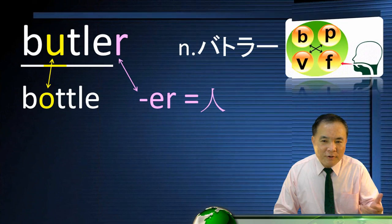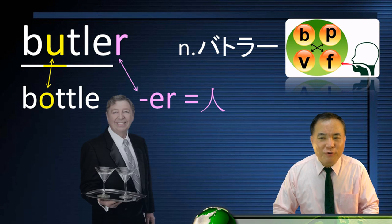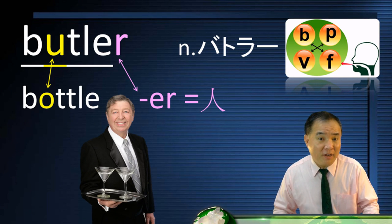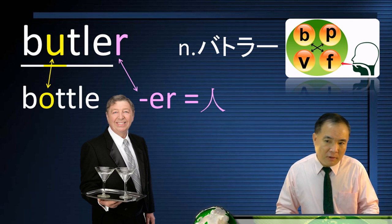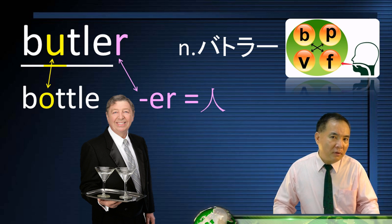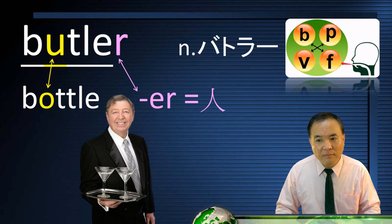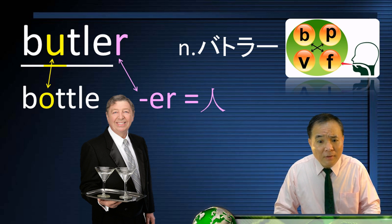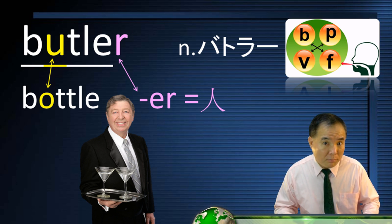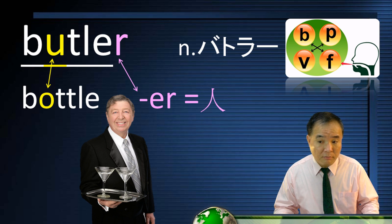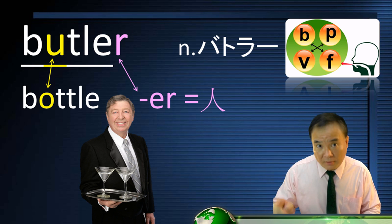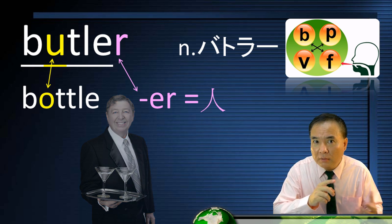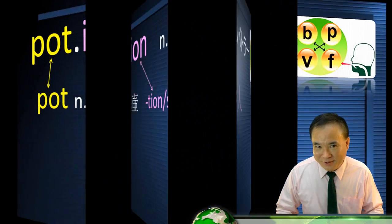The servant who used to open a bottle of wine for his master later became a butler. The suffix -er means the person. The U in butler actually comes from the O in bottle.